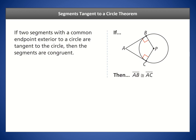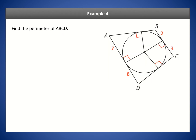The segments tangent to a circle theorem states that if you have two tangents that meet at a single point, then those two tangents are congruent — the same length. So the length from A to B equals the length from A to C. In our perimeter problem, two tangents meet at point A and are congruent, so if one segment is 7, the other is 7; similarly pairs of 2, 3, and 6 are matched up using this theorem.